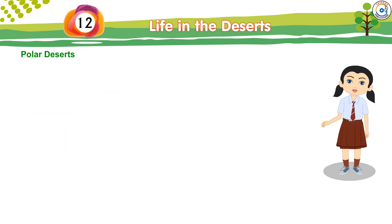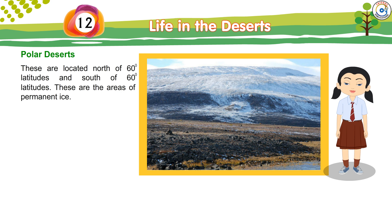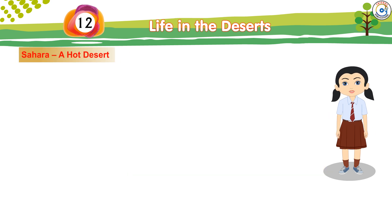Polar Deserts are located north of 60 degrees latitudes and south of 60 degrees latitudes. These are the areas of permanent ice. Sahara — a hot desert.